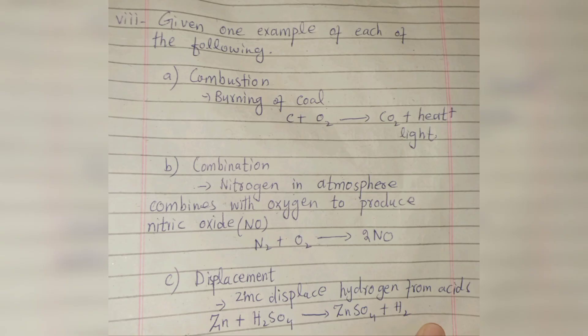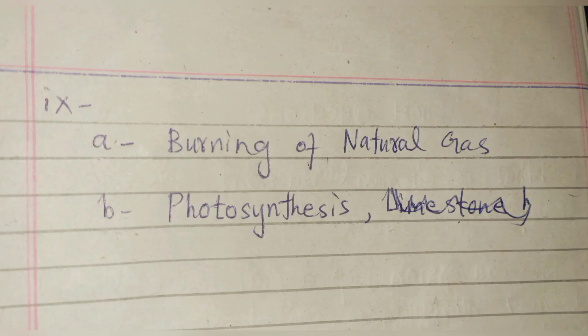Next: Give one example each of combustion, combination, and displacement reactions. Examples given: burning of coal (combustion), nitrogen in the atmosphere combining with oxygen to produce nitric oxide (combination), and the zinc reaction (displacement). Then there are questions on endothermic and exothermic reactions — reaction A is exothermic and reaction B is endothermic.